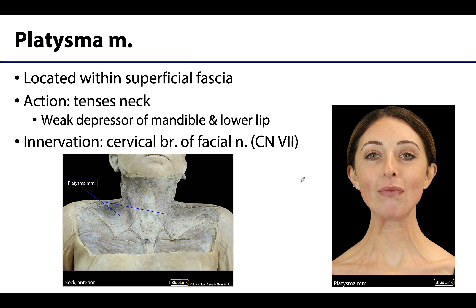In the subcutaneous tissue of the anterolateral neck you will find the platysma muscle, which is of variable thickness depending on the individual. This is a very thin flat muscle — in fact the name translates loosely to 'flat plate.' This muscle is considered a muscle of facial expression and will move the skin to convey emotion.